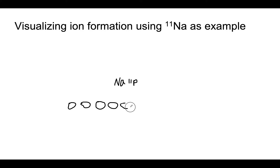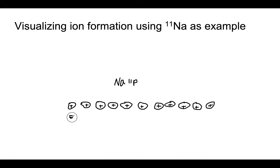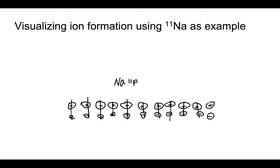This is a neutral sodium atom, so it would have an equal number of electrons. You can see there is a balance between positive and negative charges — they all cancel out. Now, imagine that sodium loses one electron.